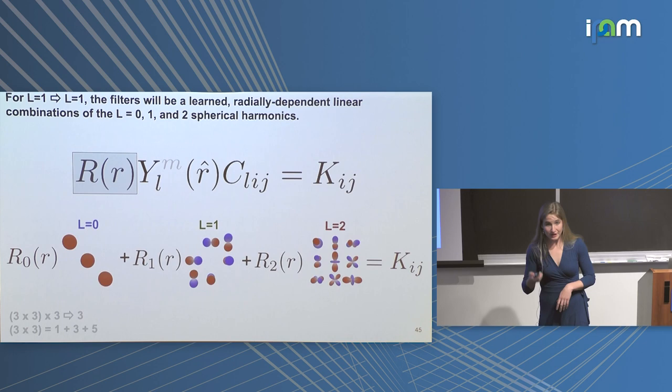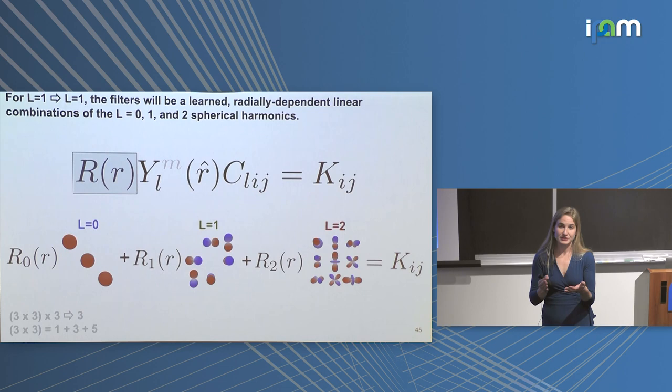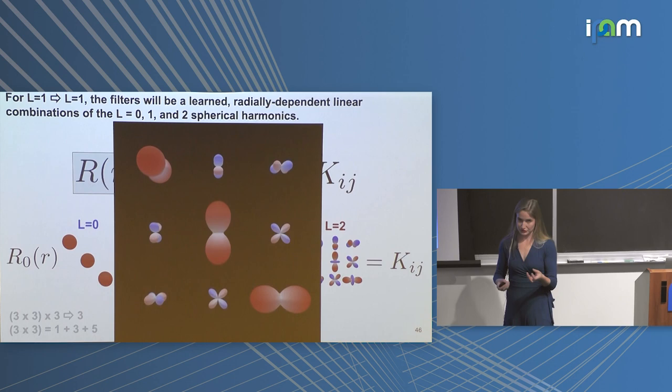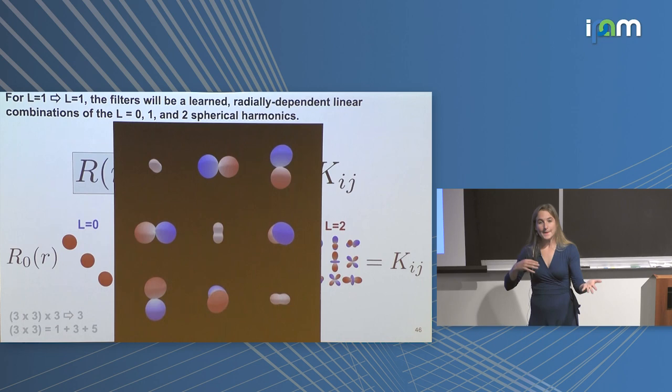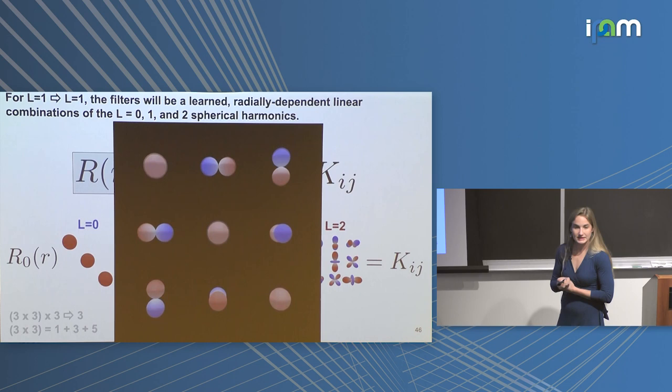I'm showing a GIF of what filters look like if we randomly initialize a network and plot them as a function of r. At r=0 the only filter is L=0, giving a blob shape. As you go out, the radial function controls how much of each set of L's contributes to the filter.